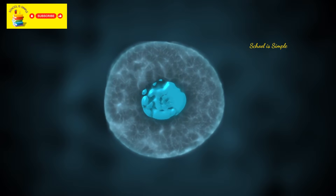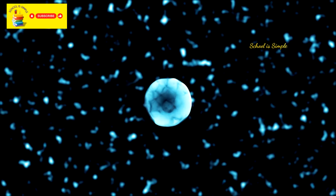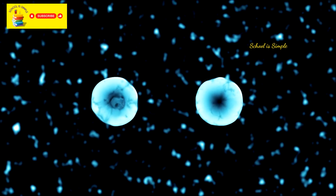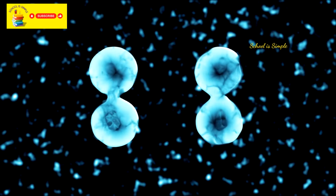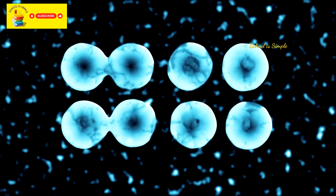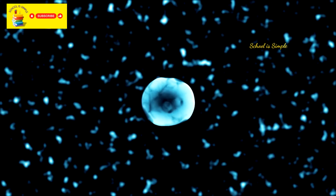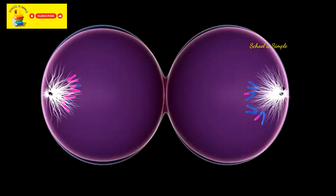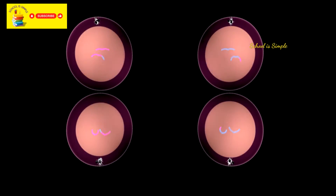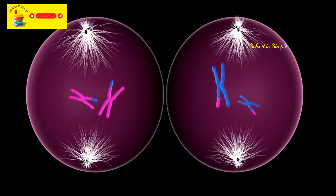Cell elongation: the cell elongates, bringing the copied genetic material closer to the centre of the cell. Formation of a septum: in some organisms, a partition or septum may form in the middle of the cell, dividing both the genetic material and other components into distinct areas. However, in some cases this step may not be necessary and the process proceeds without forming a septum. During cell division, the cell wall and membrane begin to pinch or split along the septum line, continuing until the cell is nearly divided in half, resulting in two daughter cells.